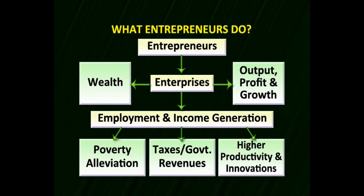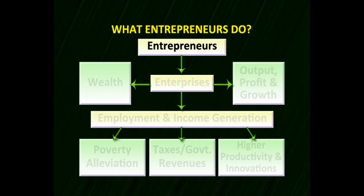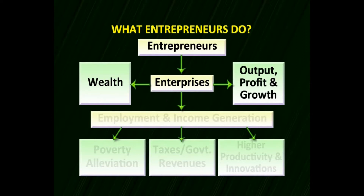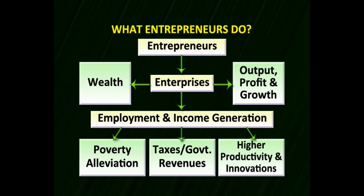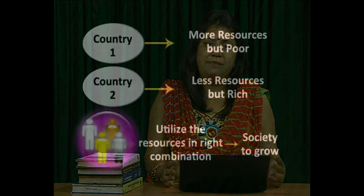What do entrepreneurs do in supplementing and complementing economic growth? In this model, entrepreneurs are persons who create enterprises. Enterprises give wealth and output — profits and growth — to society. These profits and products can be used internally or exported. This generates employment and income, which helps fight poverty elevation programs. Tax requirements of the government are fulfilled, and higher productivity through innovations is created, helping address issues related to poverty, health, and the well-being of the people.